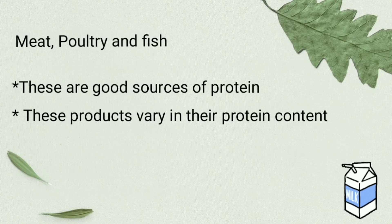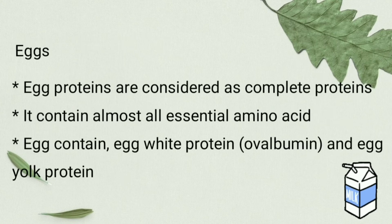Meat, fish and poultry are good sources of protein, and these products vary in protein content. Finally, egg. Egg proteins are considered as complete proteins because they contain almost all essential amino acids that are required. Eggs contain egg white protein called albumin and egg yolk protein.